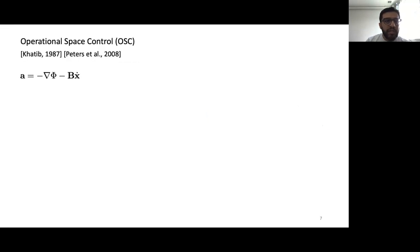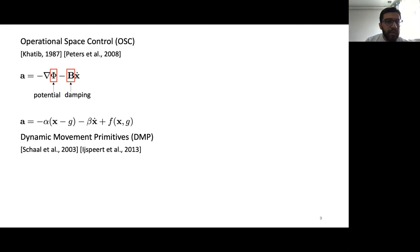Most prominently, there's Operational Space Control that basically deals with the idea of designing these policies as second-order dynamical systems. This should remind you of things like PID control where you have some potential functions, some damping function. This should also maybe remind you of Dynamic Movement Primitives, where this potential specifically takes a form of a quadratic function centered around the goal and the damping function can be just some constant beta.